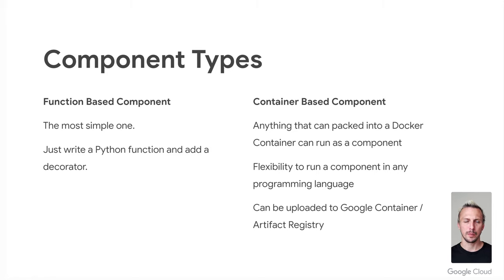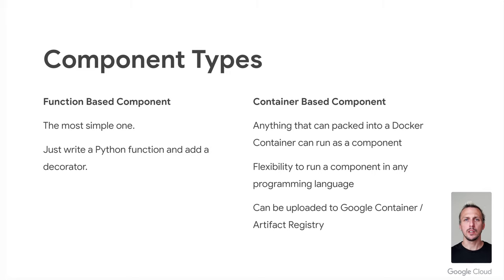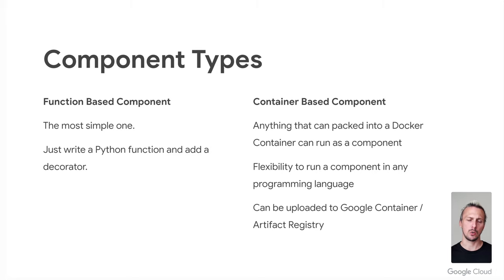There is a second type of component: container-based components. Those can be really useful if you're not using Python, or the steps of your pipeline are already implemented in a dockerized way. If you ask which one to choose, it doesn't really matter. A pipeline in a pure Python function properly added to a Git repository can be managed just as well as the container-based component. For now, we focus on function-based components.